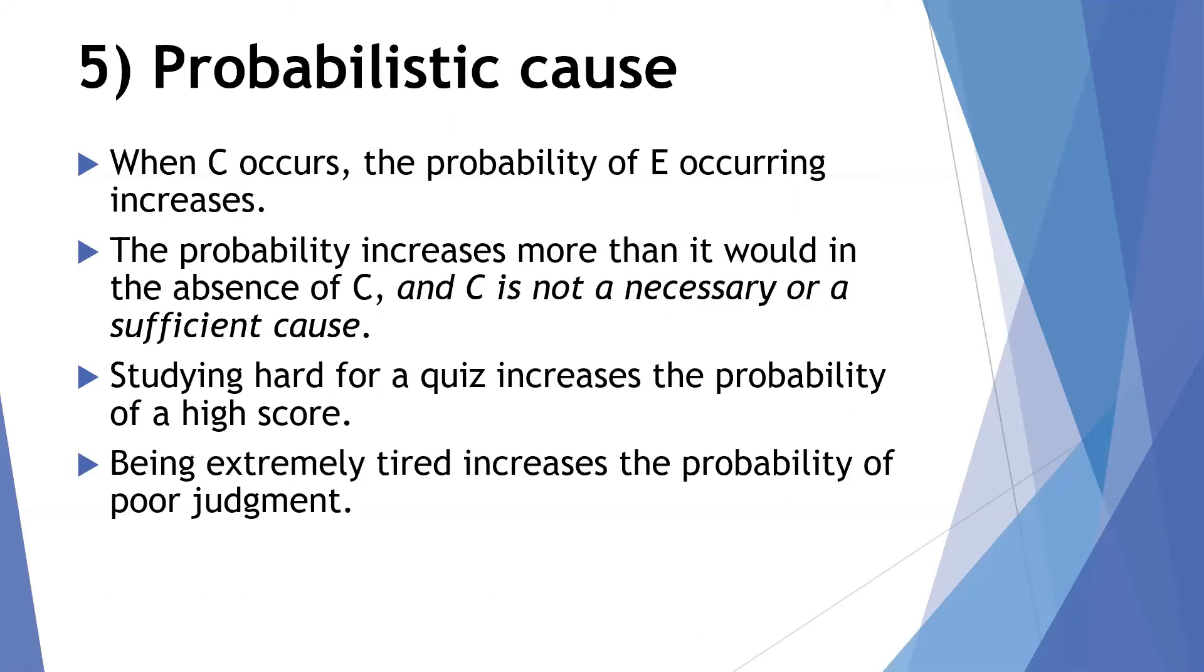Another example would be being extremely tired increases the probability of poor judgment. So somebody might say they made a poor judgment because they were tired. That would be a probabilistic cause.